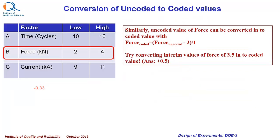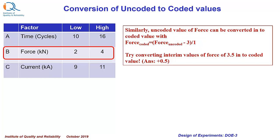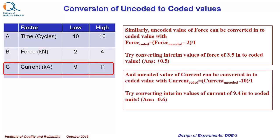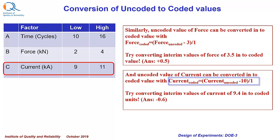Similarly, uncoded value of force can be converted into coded value with the equation: force coded equals force uncoded minus 3, divided by 1. Try converting an interim value of force of 3.5 to coded value. For current, the conversion formula will be: current coded equals current uncoded minus 10, divided by 1. Here you can try conversion of a current value of 9.4 to a coded unit.